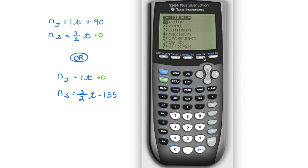I could still move it up and over a little bit, but that's okay. We're going to go second function trace. Number five is intersect. We're going to move our cursor close. As long as you're in the near vicinity, your calculator is pretty good. So it says, are we on the first curve? Yes. Are we on the second curve? Yes. Do you want me to guess? Yes. And there's our point of intersection.